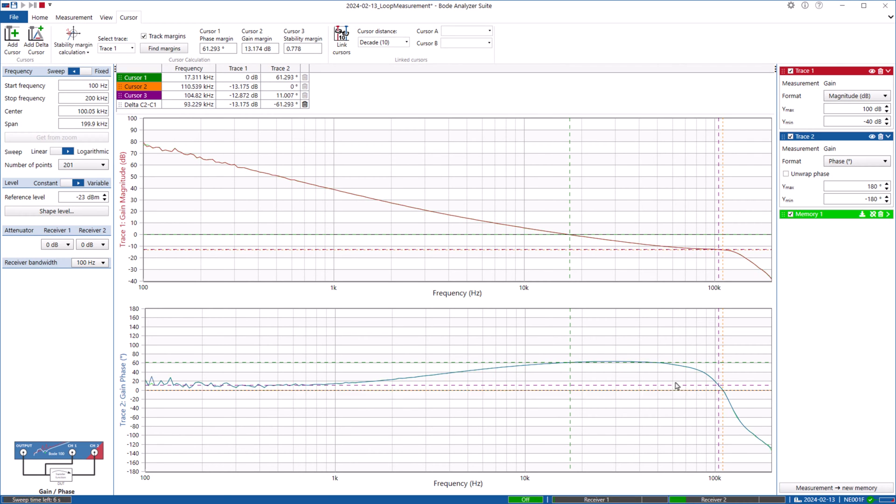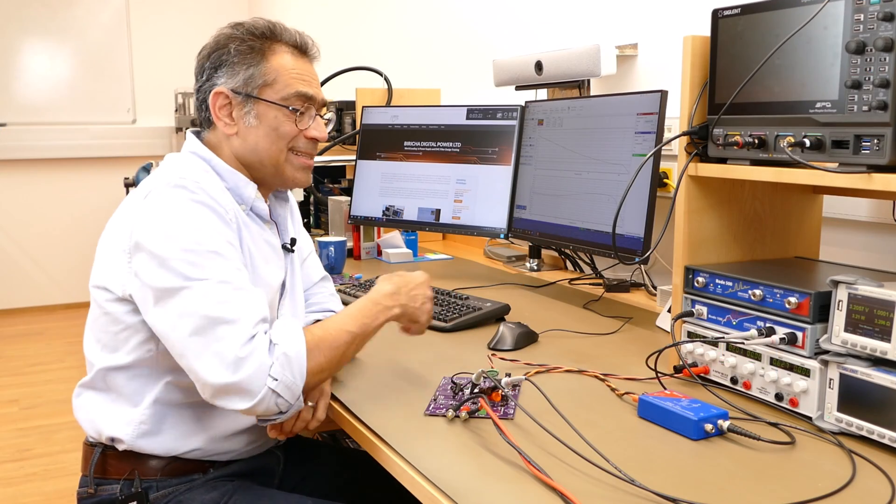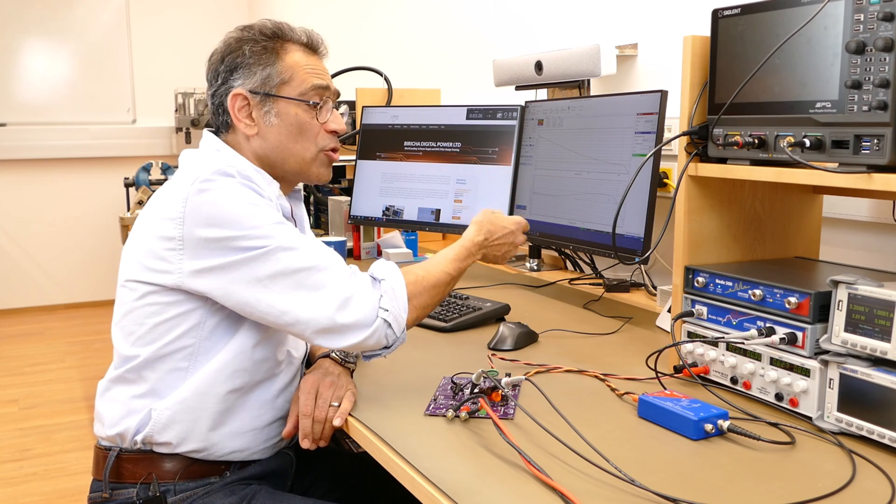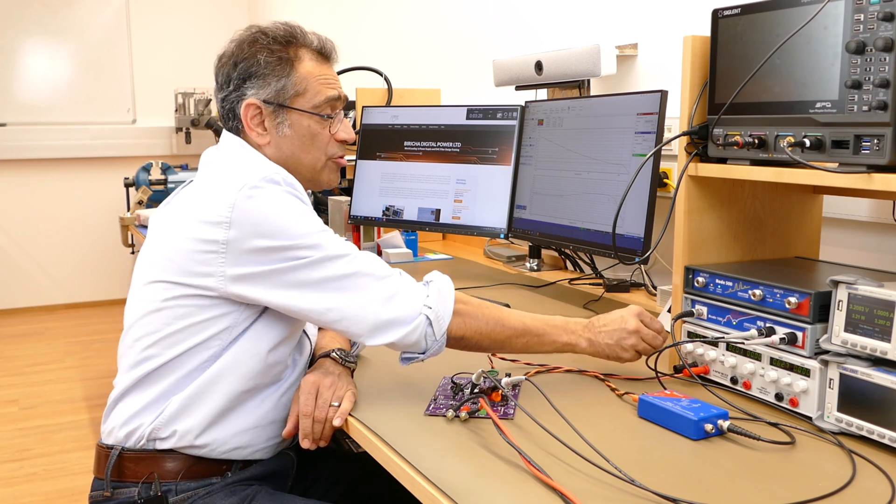You now can see that we are starting at around 17 kilohertz crossover frequency. I'm going to save that to memory and now I'm going to do exactly the same thing. I'm going to increase the input voltage and we're going to see how the crossover frequency of the current mode controller is going to change.